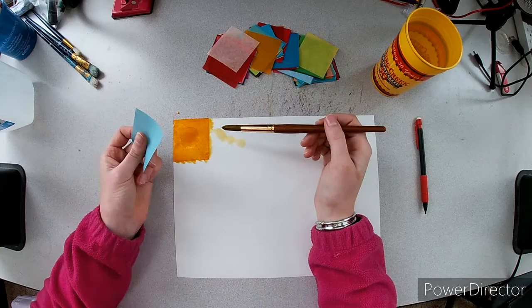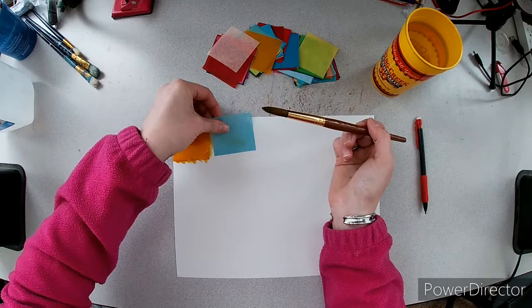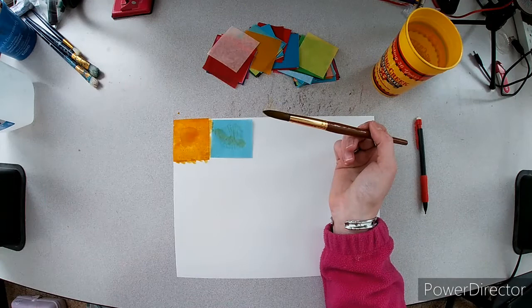So I'll do this process again. Put water on the paper, then you put your tissue paper on top of that. And if you have any white spots, that's fine because we can overlap on top of it later.